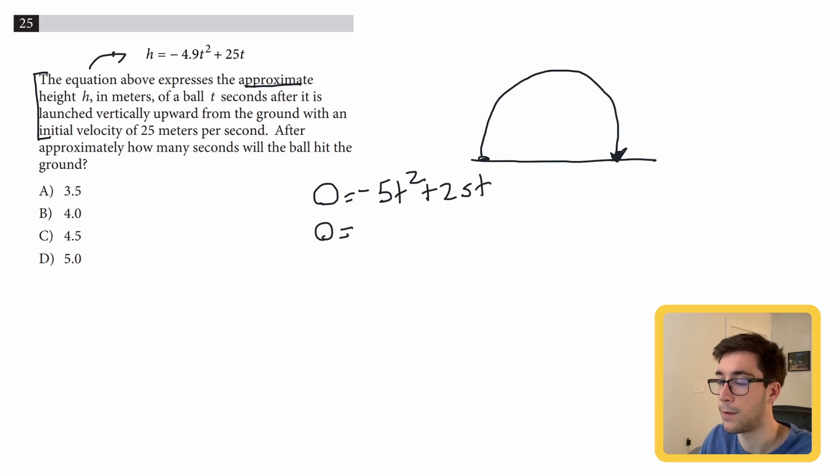First thing I'm going to do with this equation is take out a common factor. Both of these have a five I can pull out and both of these have a t I can pull out, so five t. That leaves us with a negative t in the first term. Pulling five t out of this would leave us with five and no t.